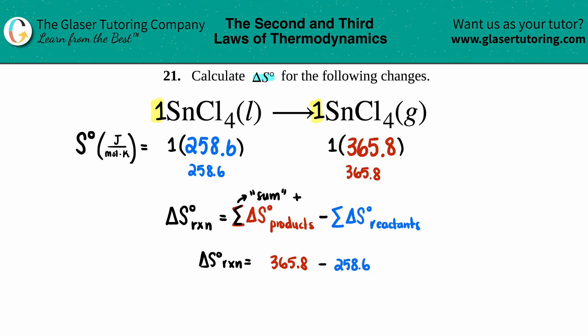ΔS° for the whole entire reaction is just that subtraction: 365.8 minus 258.6, and I get a positive ΔS° value. That makes sense given that we're going from a liquid to a gas—we're becoming more random, so you could always kind of double-check your answer. 107.2, and the units for ΔS° standard is joules per mole times Kelvin.